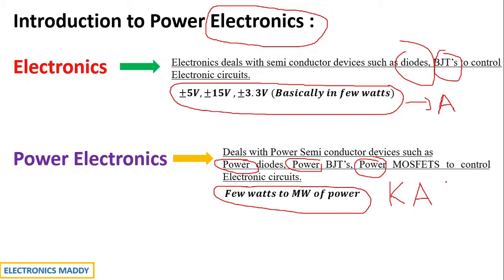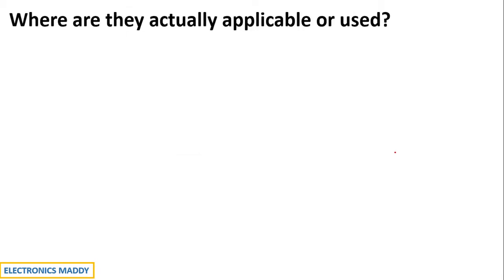So that is the fundamental difference. Power electronics basically deals with power semiconductor devices — a very important observation to be noted. Having seen the definition of power electronics, you might be asking why should I study power electronics in the first place? That is a reasonable question. To understand why we need power electronics, we need to see where they are applicable or actually used.